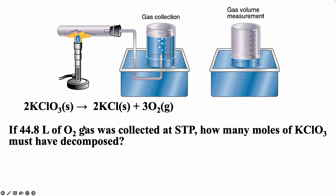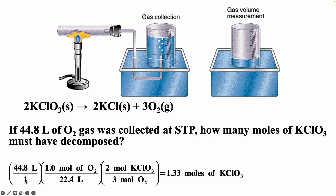44.8 liters of oxygen gas is collected at STP. How many moles of potassium chlorate must have decomposed? At STP, 1 mole corresponds to 22.4 liters, so 44.8 liters = 2 moles of O2. From the decomposition equation, every 2 moles of potassium chlorate gives 3 moles of O2, so moles of KClO3 = 44.8/22.4 × (2/3) = 1.33 moles.